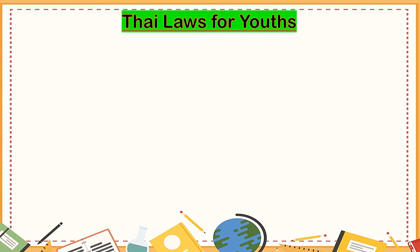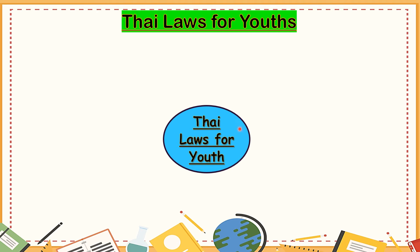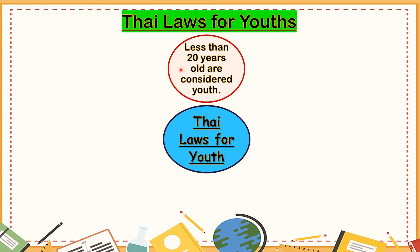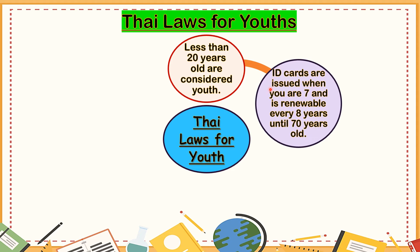Let's discuss the Thai laws for youths. Less than 20 years old are considered youth — you are considered youth because you are just 13 or 14 years old. ID cards are issued when you are 7 and are renewable every 8 years until 70 years old. When you reach the age of 7, your parents will get you a Thai national ID card and you renew it every 7 years until you reach the age of 70.